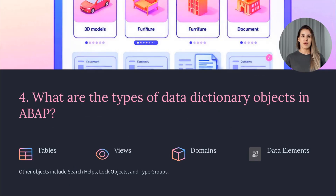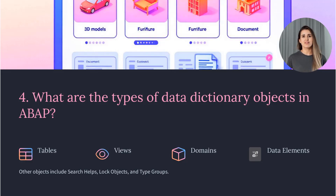Four: What are the types of data dictionary objects in ABAP? Tables, views, domains, data elements, search helps, lock objects, and type groups.